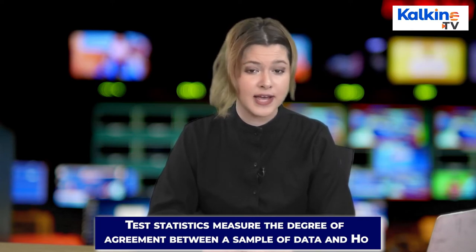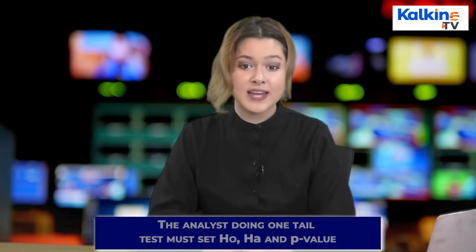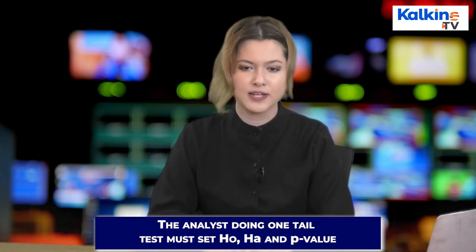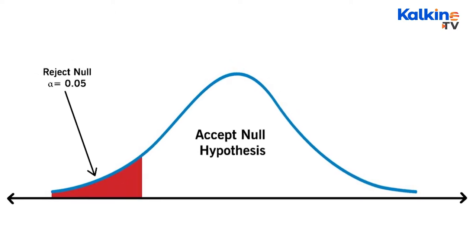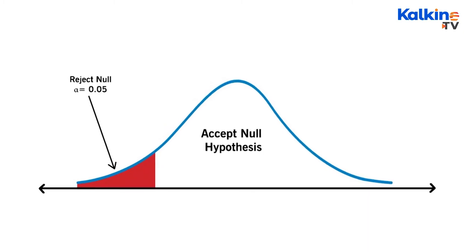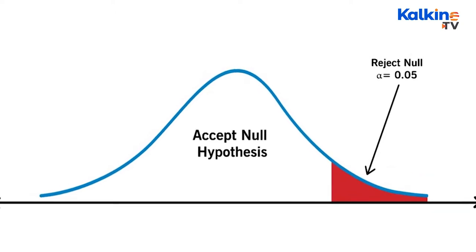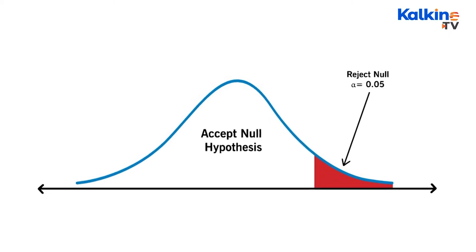A one-tailed test is a statistical test where the critical area of the distribution is one-sided. The one-tailed test shows that the sample mean would be greater than or less than the population mean. While using a one-tailed test, the analyst tests the probability of the relationship in one direction of interest, ignoring the relationship in the other direction.